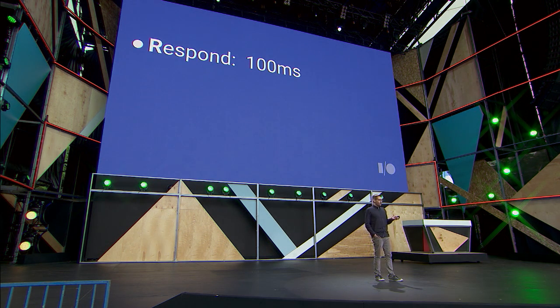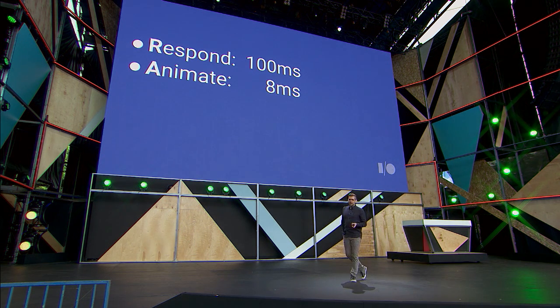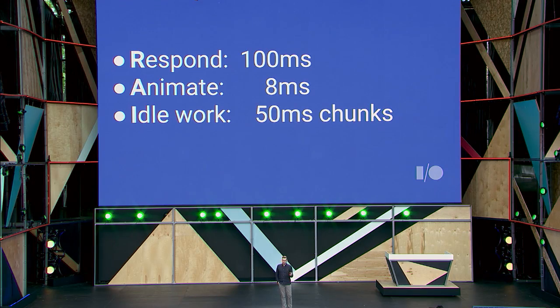To recap RAIL: the R stands for Respond — we want to respond within 100 milliseconds to any user action. We also want to animate at 60 frames a second, which means getting frames on screen consistently every 16 milliseconds. The browser has to do work when we change HTML, CSS, or DOM — it has to reapply that change and paint it out to the screen. So we've probably got less than 16 milliseconds; a good rule of thumb is to get your main thread work for animations done in 8 milliseconds, or half the total frame time. We want to avoid timers that run forever in the background, waking up the CPU and draining your battery. When we're idle, we want to do work in collaboration with the browser, breaking it into small chunks of around 50 milliseconds each — at that size, we can respond within the 100 millisecond window when the user taps next.